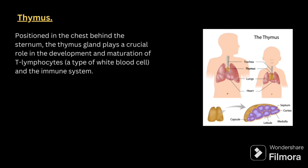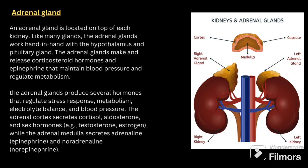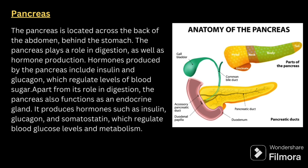Next, we will be talking about the adrenal gland. The adrenal gland is located on the top of each kidney. The adrenal gland works hand in hand with the hypothalamus and the pituitary gland. It makes and releases corticosteroid hormones and epinephrine that maintain blood pressure and regulate metabolism. The adrenal cortex secretes cortisol, aldosterone and sex hormones such as testosterone and estrogen, while the adrenal medulla secretes adrenaline, epinephrine and noradrenaline, norepinephrine.